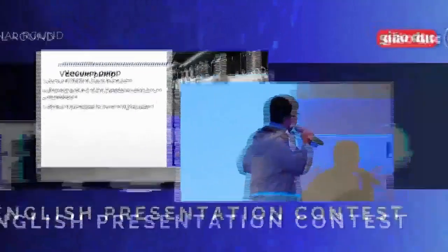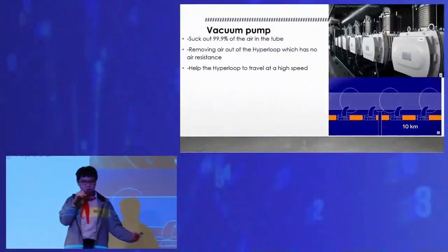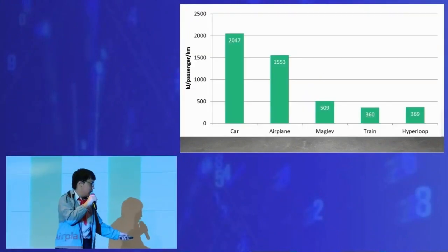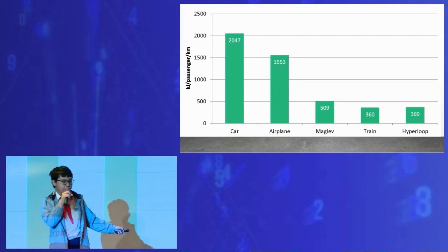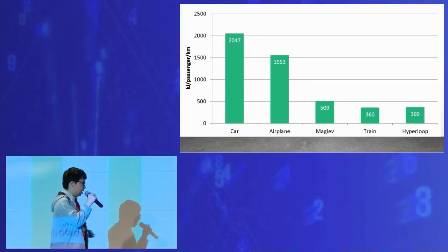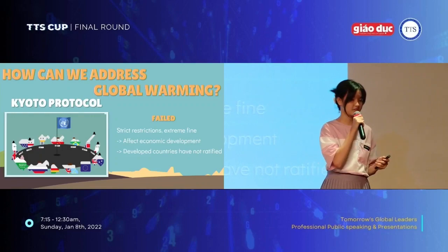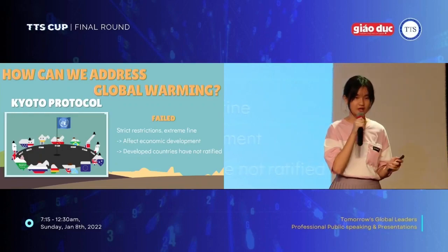According to science research results, the hyperloop uses low energy compared to different transportation. During that, their economic development could be negatively affected, so they have not ratified it, despite accounting for the largest proportions of the world's emissions. Such selfish decisions from political leaders have made this solution fail and are one of the signs of human extinction.